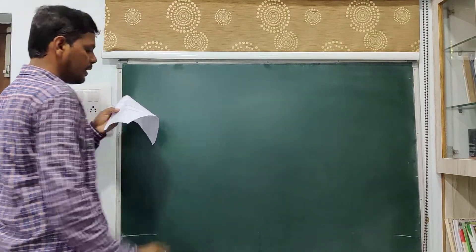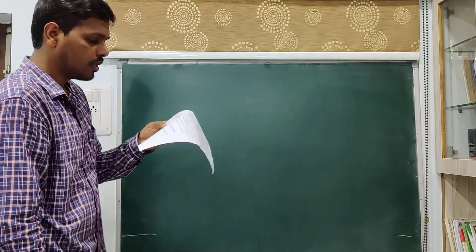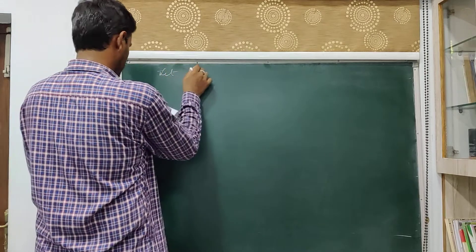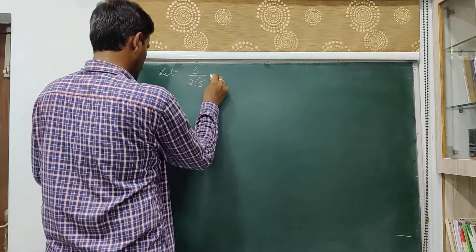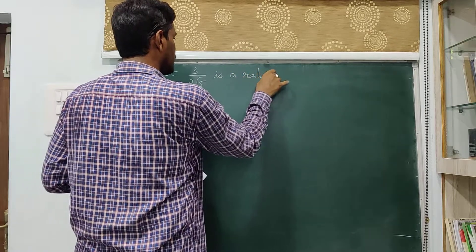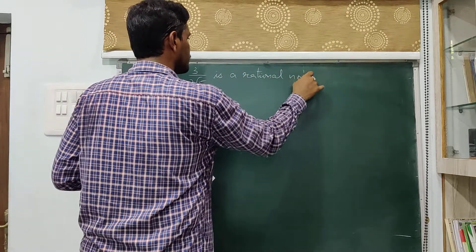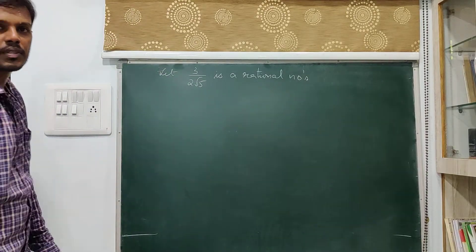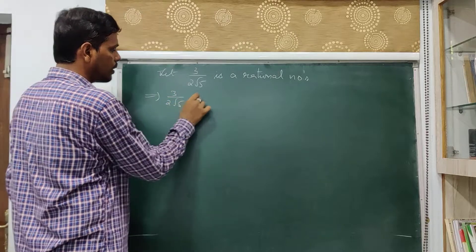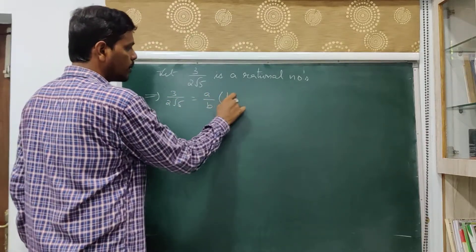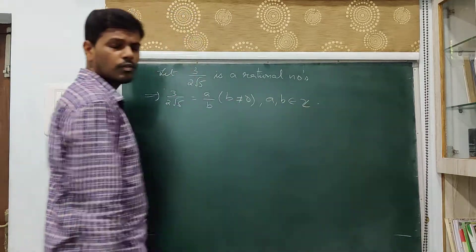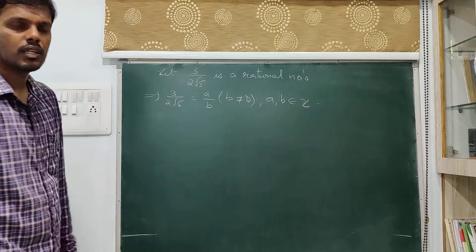We have to prove that 3 divided by 2√5 is an irrational number. Let us assume that 3 by 2√5 is a rational number. Since it is rational, it can be expressed in the form a by b, so that implies 3 by 2√5 equals a by b, where b is not equal to 0 and a and b are integers. The HCF of a and b equals 1, meaning a by b is in its simplest form.